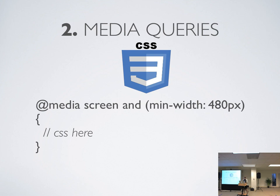Media queries are described in CSS and they basically look like this. It's the @media tag followed by the type of media we care about — so it could be screen, projector, or print — and then some conditional statements. For responsive web design, we usually focus on min-width and max-width. You can also use resolution if that's something you care about.